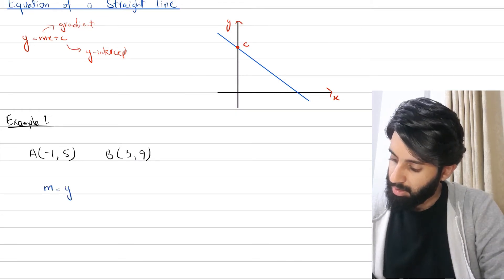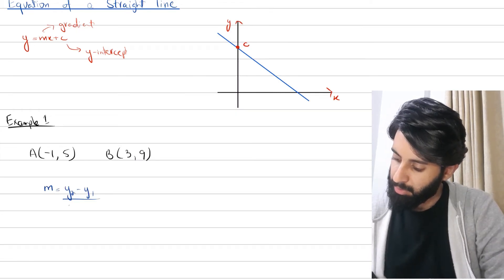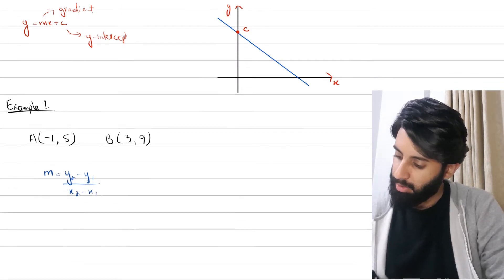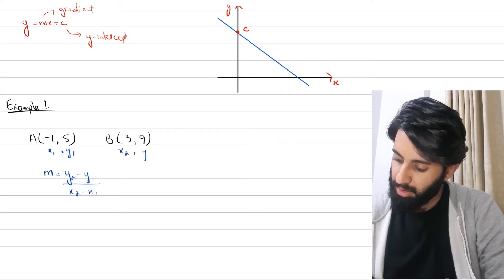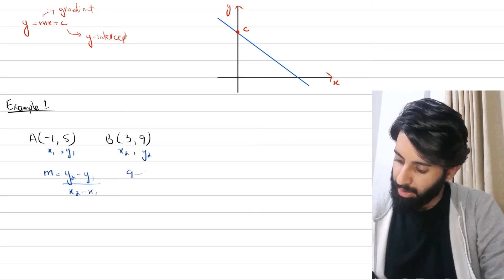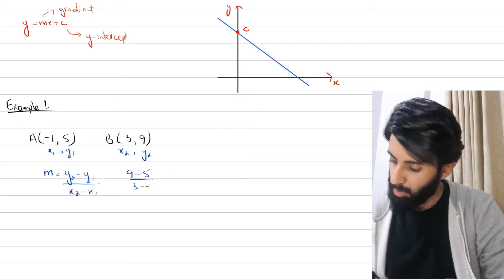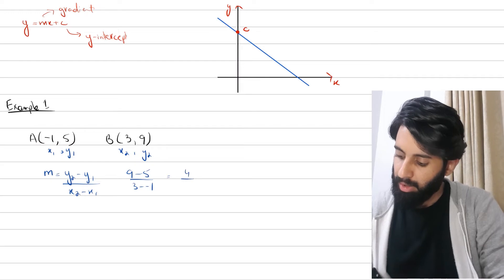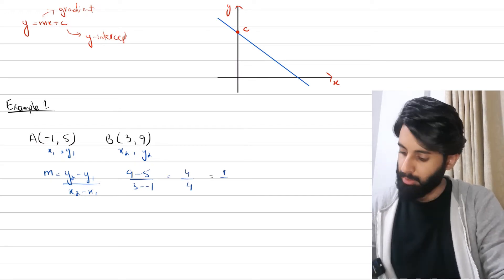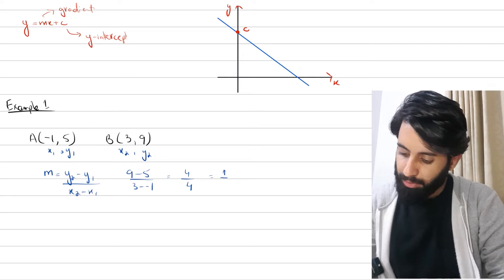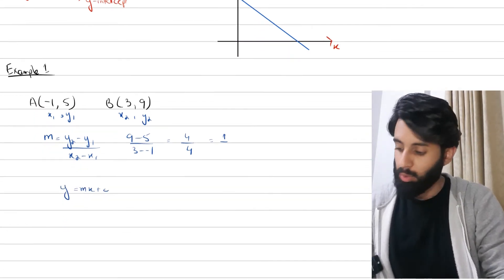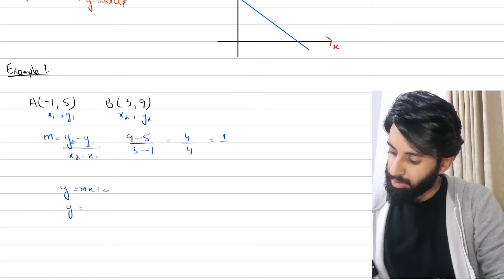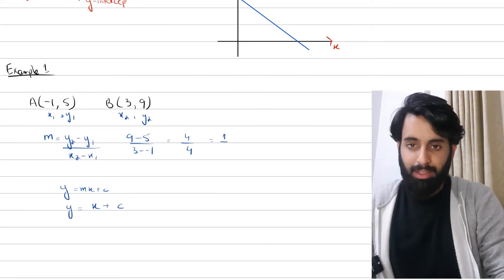To find the gradient, use the formula (y₂ − y₁) / (x₂ − x₁). Here x₁ = −1, y₁ = 5, x₂ = 3, y₂ = 9. So we have (9 − 5) / (3 − (−1)), which is 4/4, which equals 1. So far in y = mx + c we've figured out the value of m, which is 1, so our equation so far looks like y = x + c.